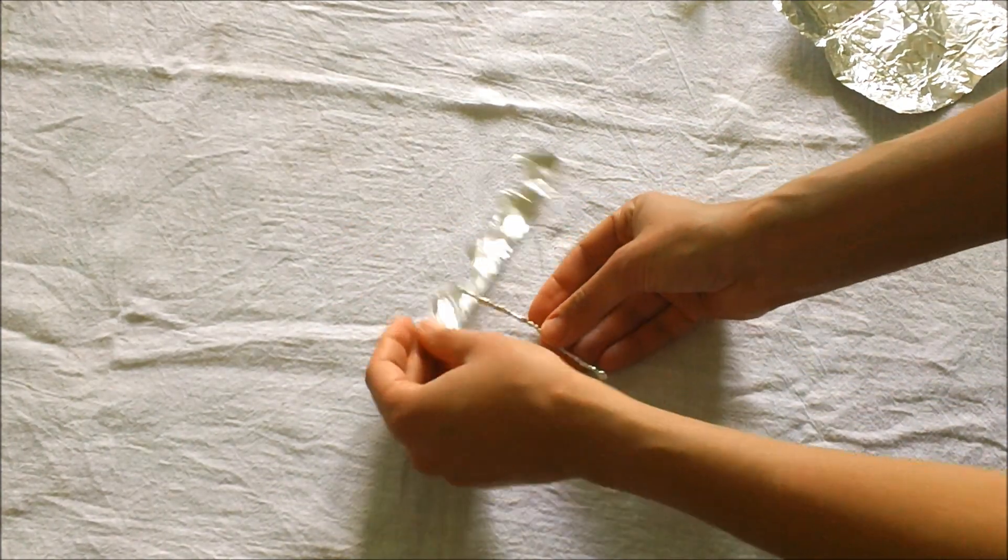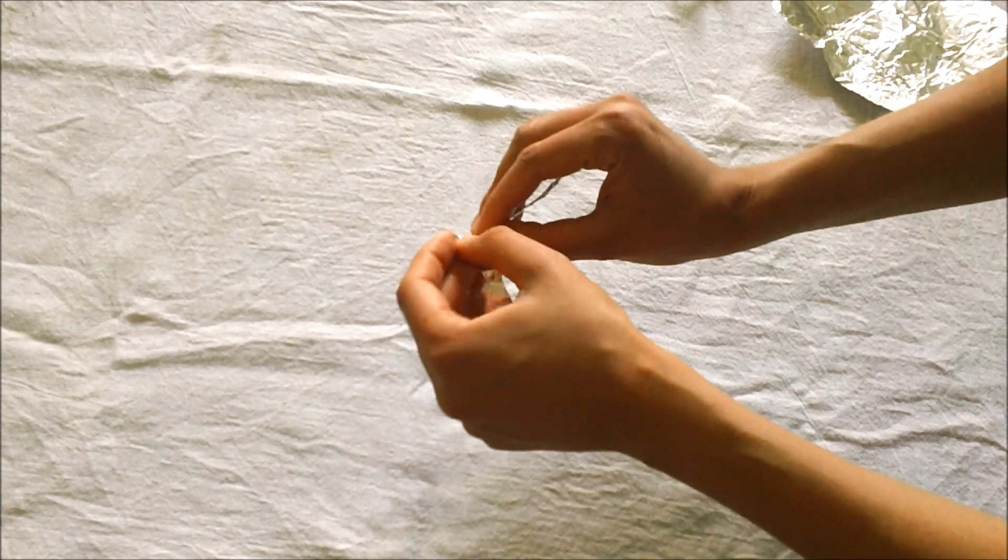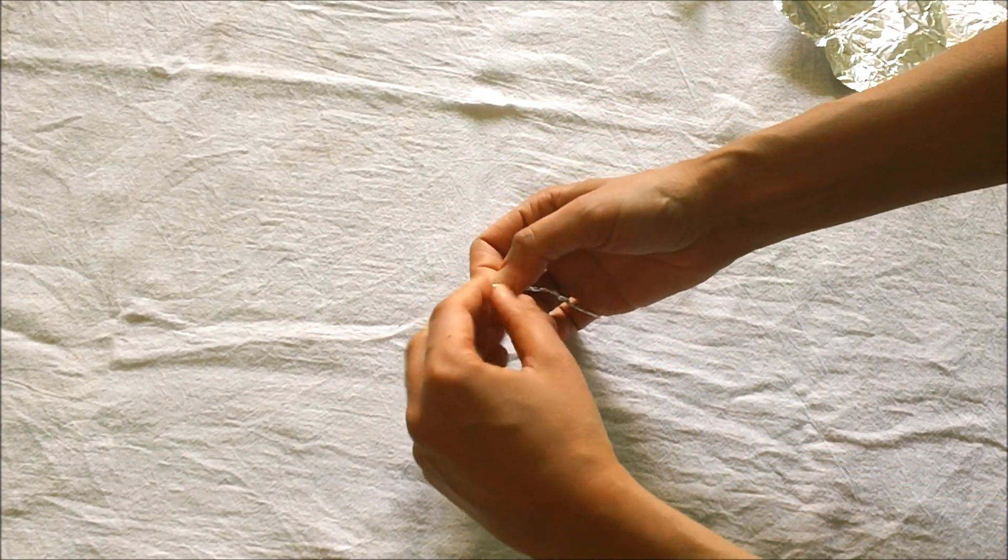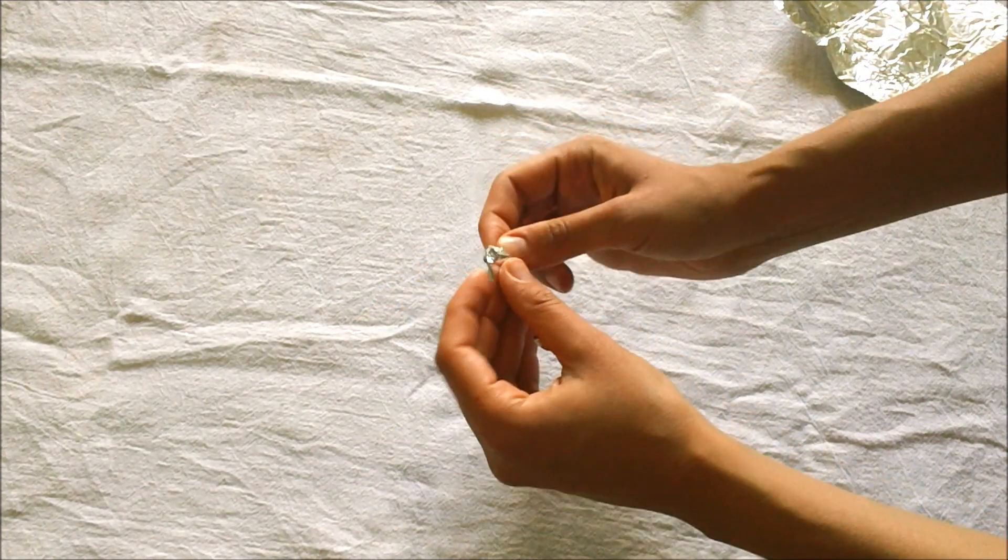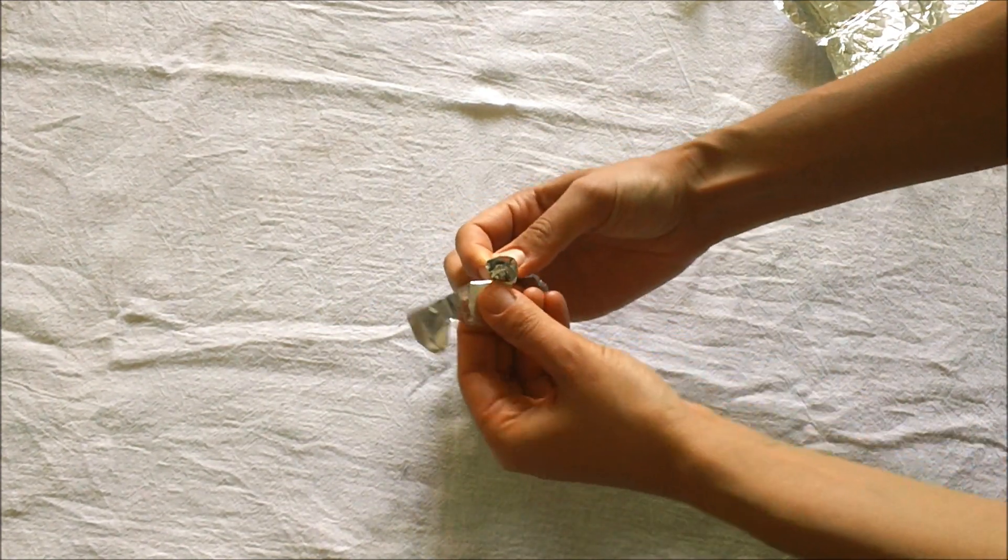Now, start wrapping the first strip around the stem and if you can't see what I'm doing, it's the same technique for doing roses, which I have a video on. So, I'll link it for you so you can see more clearly what I'm doing.